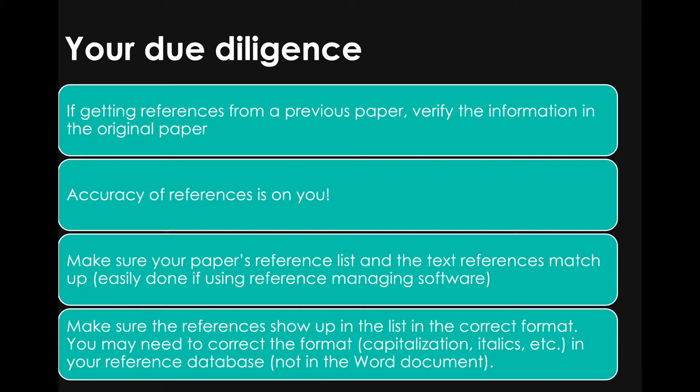You also need to make sure that your paper's reference list at the end of the paper matches up with the in-text citations. When I first started writing papers, I didn't use reference-managing software, so I had to do that manually — print the reference list and the paper, trace through it, and check every citation against the reference list to make sure they were accurate and none were missing. I really recommend that you use reference-managing software, which makes this easy and automatically matches the reference list with in-text citations.